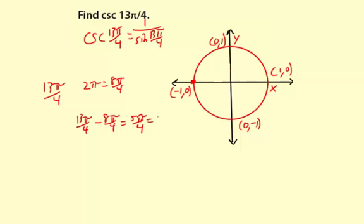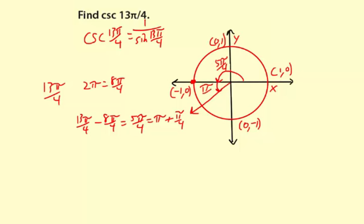5π over 4 equals π plus π over 4. The reason I wrote it like this is because π is a half rotation, and then π over 4 beyond that is right here. So this is 5π over 4 total, but this reference angle here is simply π over 4.